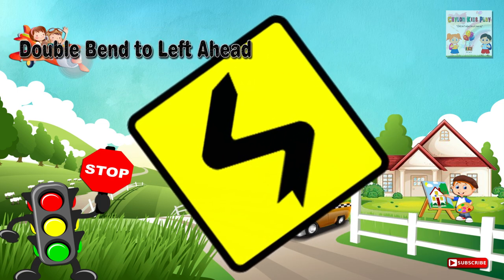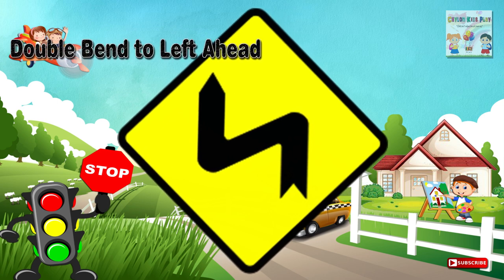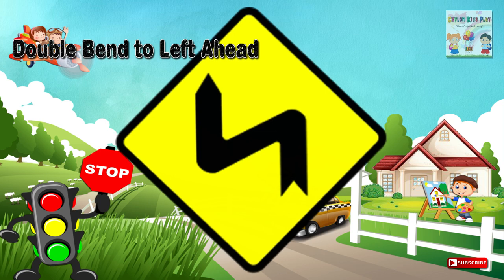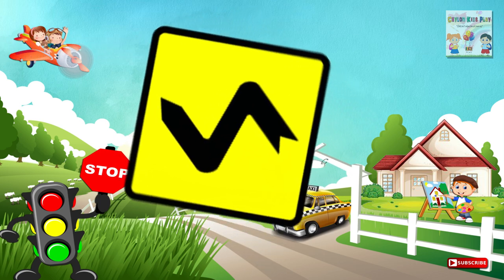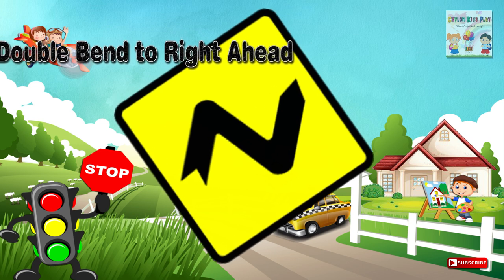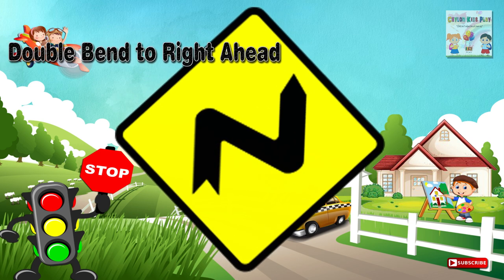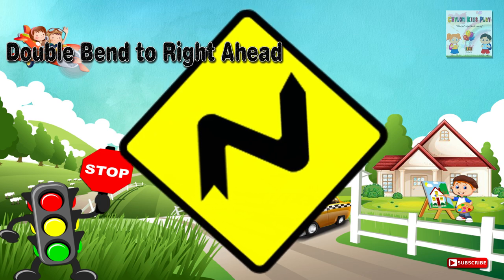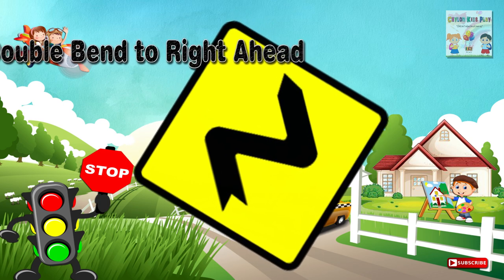Three: Double bend to left ahead — a place ahead where two bends in a road are in close proximity, the first being towards the left and the second to the right. Four: Double bend to right ahead — a place ahead where two bends in a road are in close proximity, the first being towards the right and the second to the left.